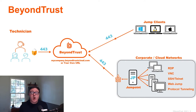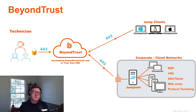That can be an on-premises appliance or a cloud appliance. Again, it's just an outbound 443 connection. And on the right-hand side, we see a couple of different types of connections that the technician is able to take advantage of, and we'll talk about how those connections work.